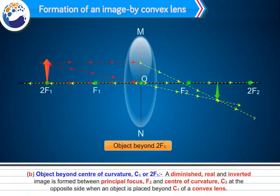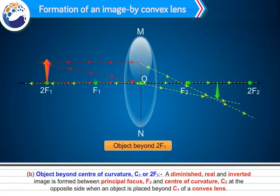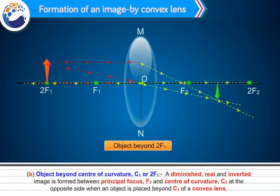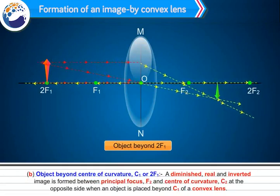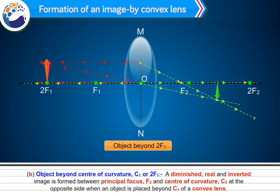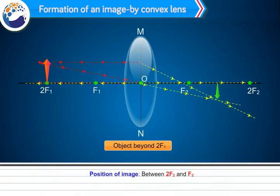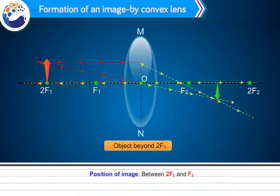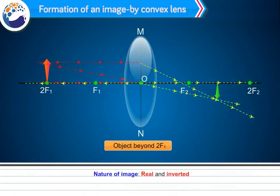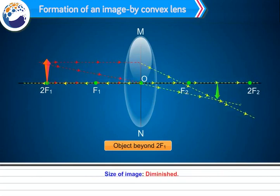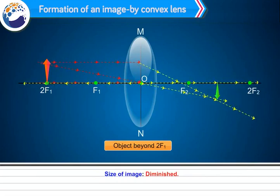When an object is placed beyond the centre of curvature C1 (or 2f1) of a convex lens, a diminished, real and inverted image is formed between the principal focus F2 and centre of curvature C2 on the opposite side. Position of image: between 2f2 and F2. Nature of image: real and inverted. Size of image: diminished.